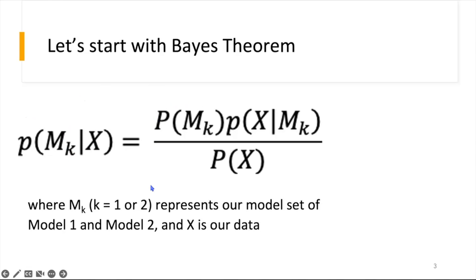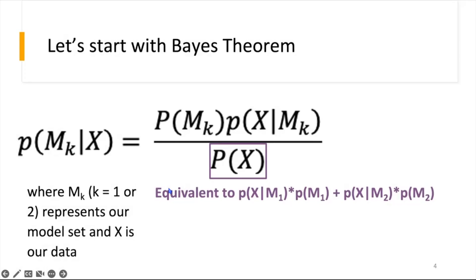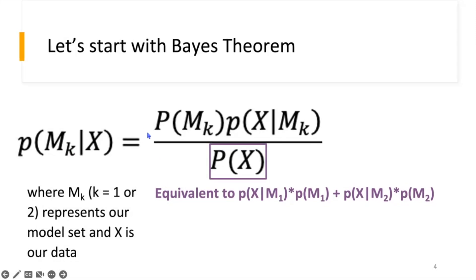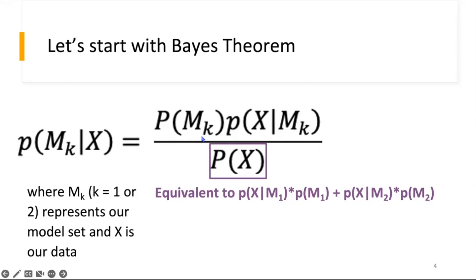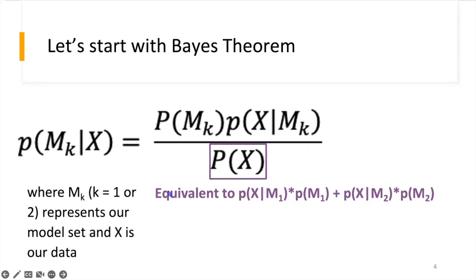Furthermore, since we denoted our model set, our denominator would actually be equal to all possible cases — equivalent to the probability of the data given model one times the prior probability of model one, plus the probability of data given model two times the prior of model two. This is further explained in Kass and Raftery 1995. Since we've expanded the denominator, we can see that the denominator would be equivalent when looking at model one or model two.